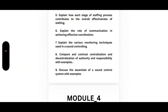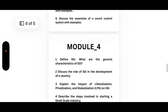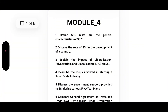Now coming to Module 4. First, define small scale industry (SSI) and what are the general characteristics of SSI? Second, discuss the role of SSI in the development of a country. Third, explain the impact of liberalization, privatization, and globalization on small scale industry. Fourth, describe the steps involved in starting a small scale industry.